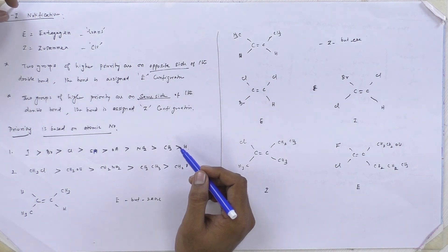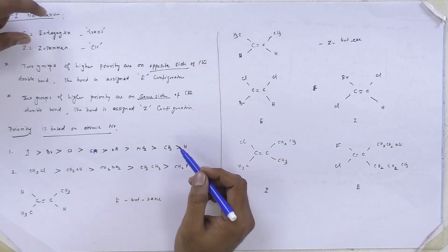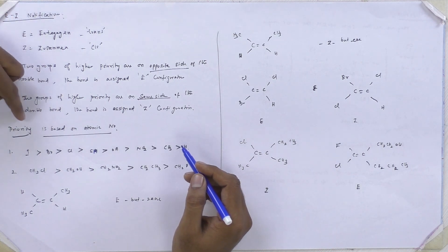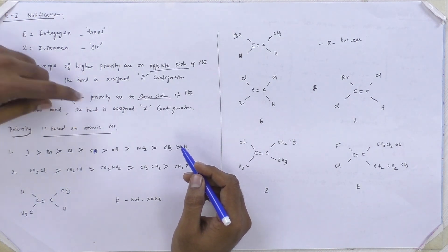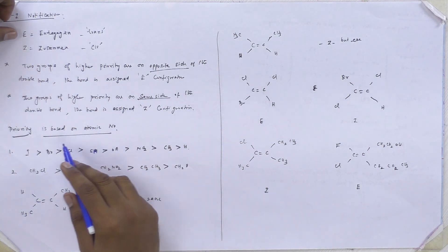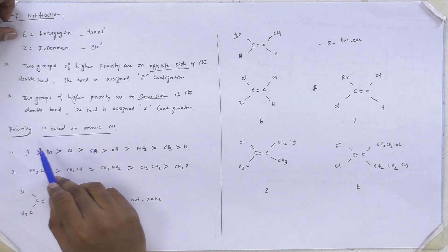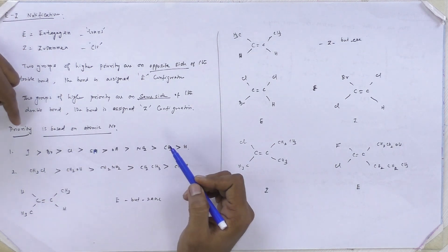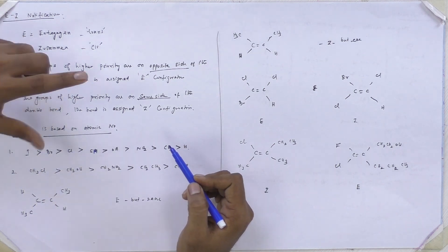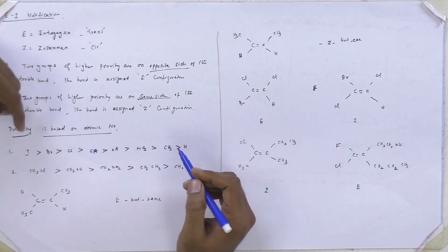So we have to name an E or Z configuration. To find the priorities, priority is based on atomic numbers.